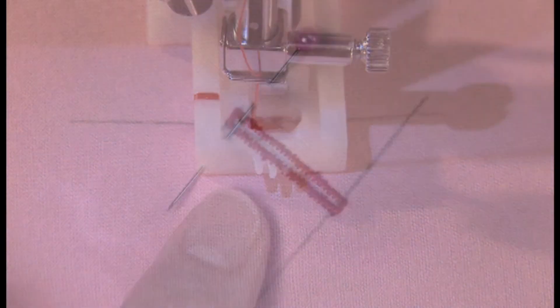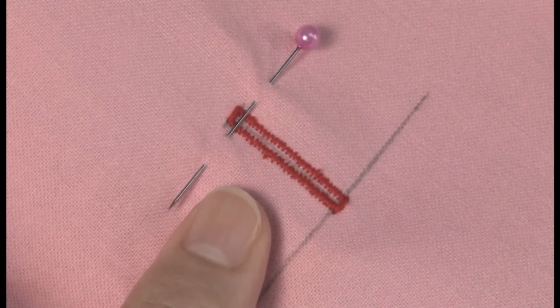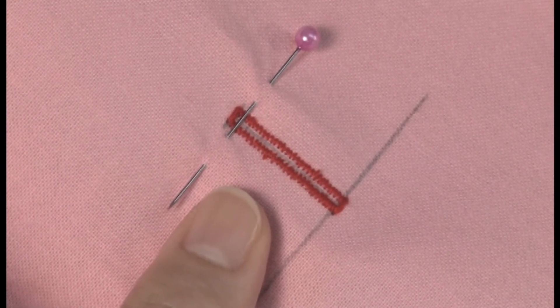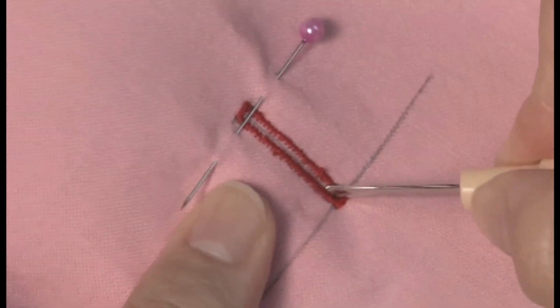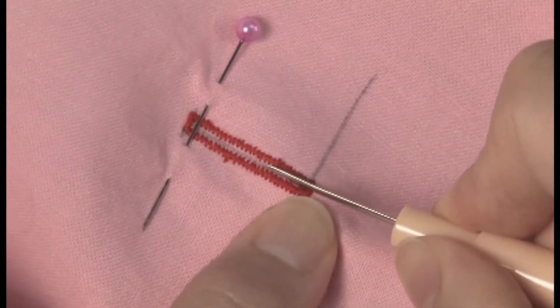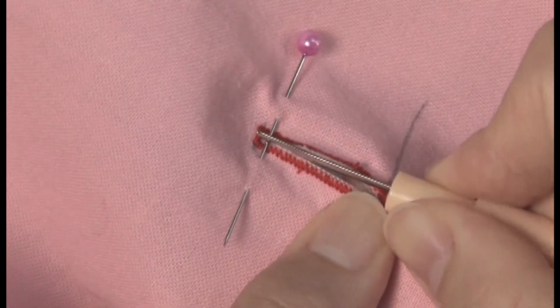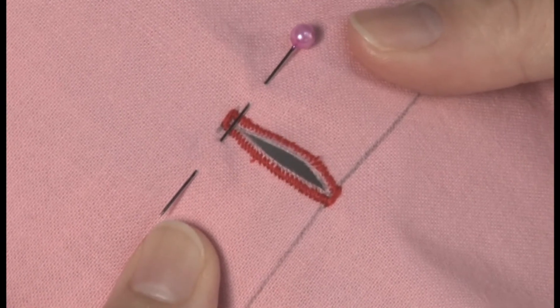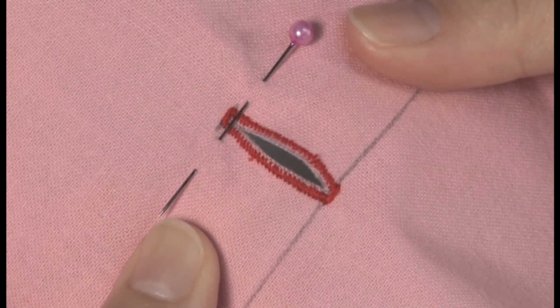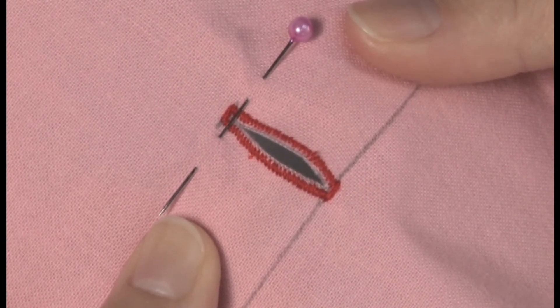When the sewing is finished, use a seam ripper and a stopper pin to cut the buttonhole. Now your buttonhole is completed. Thank you.